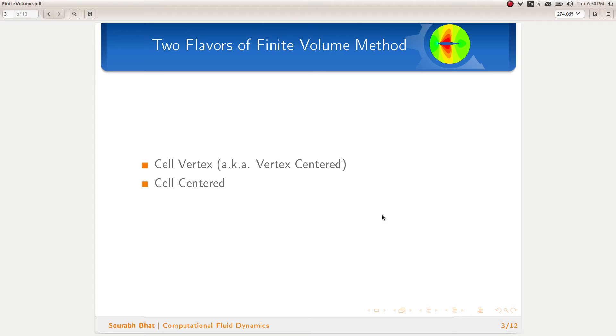Now, let us have a look at the finite volume formulation. The finite volume formulation has two different flavors. One of them is called the cell vertex method and the other one is called the cell centered method.